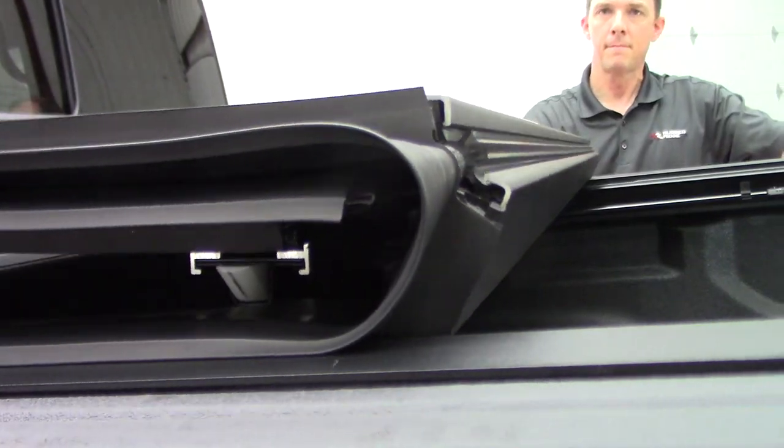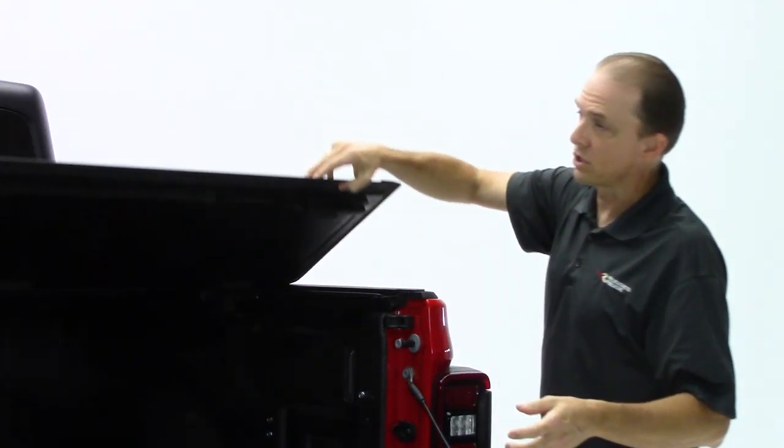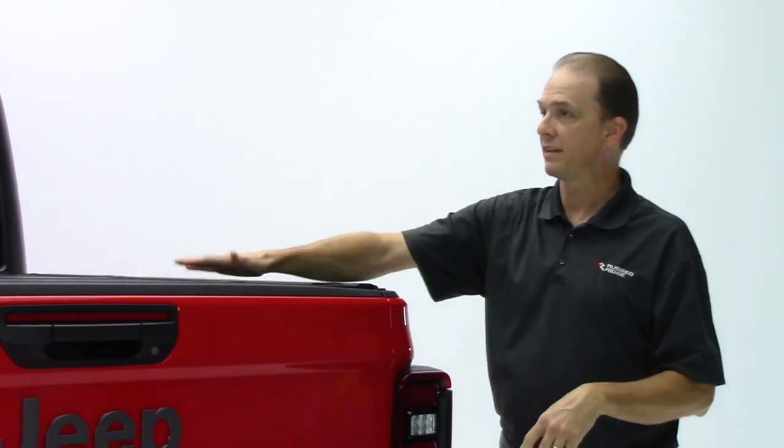One of the nice things about this is you're not losing any of your cargo capacity with this top. So it gives the full use of the back of the bed. Easy tri-fold opening and when it's closed, the bed is secure when you lock the tailgate. So you don't have to have any locks in the cover.